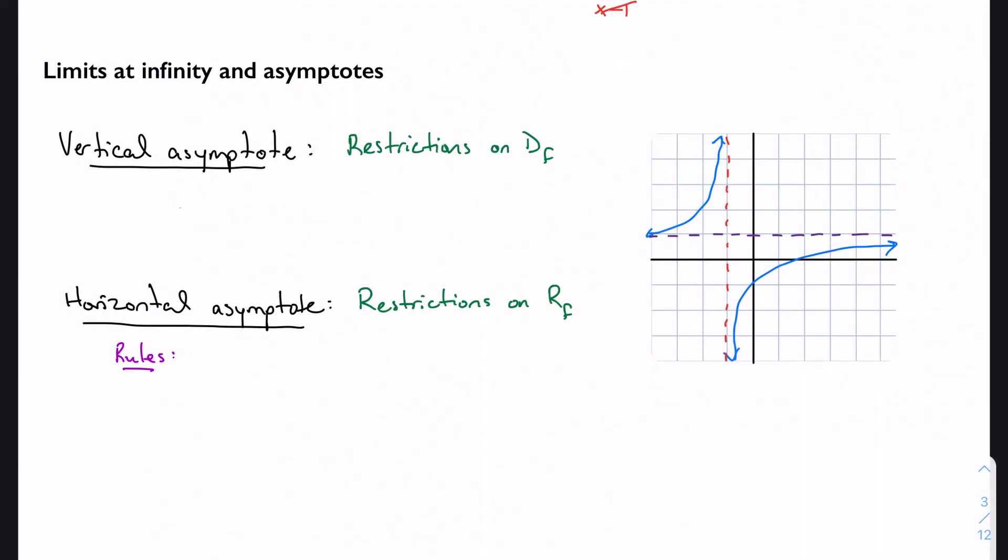So we've talked about what a limit is and what it means for a function to be continuous. The next step is to apply and extend that knowledge, and the way we do that is by looking at infinite limits and redefining the way that we think about asymptotes.